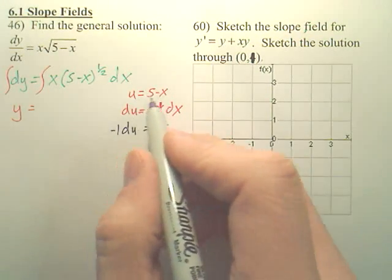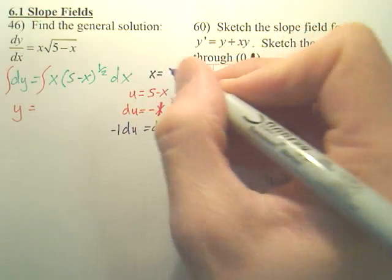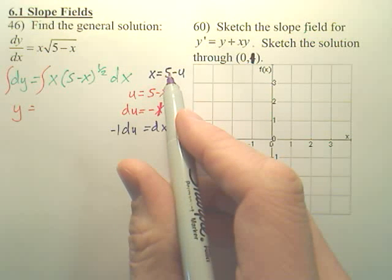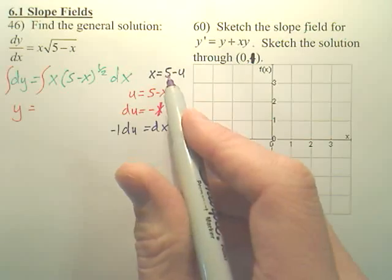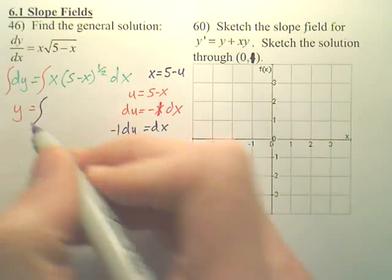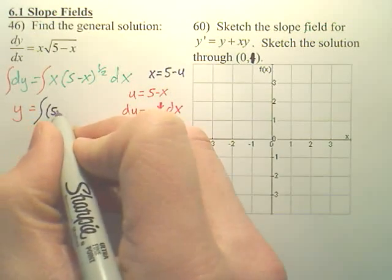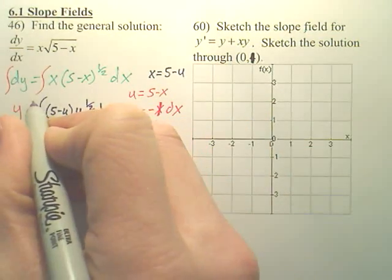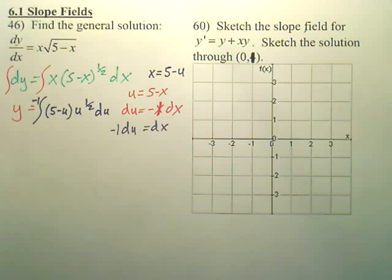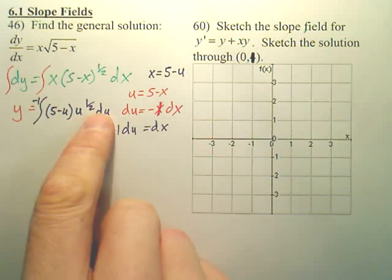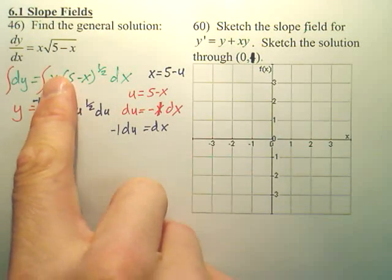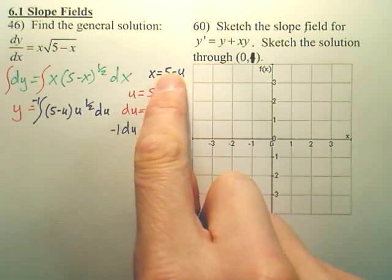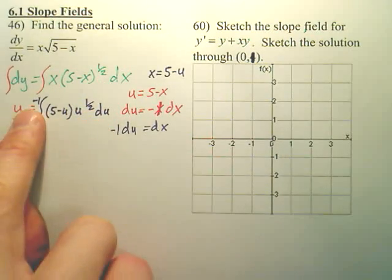But if we go back to this, can we write this as x equals 5 minus u? Can I get this into x equals 5 minus u? We write this like this. So what we now have is the integral of x is 5 minus u. And isn't this u to the 1/2? And isn't this du? And can I put a negative 1 out front?